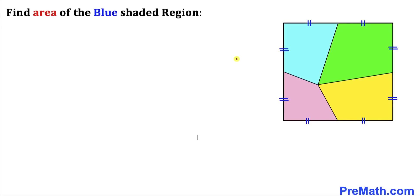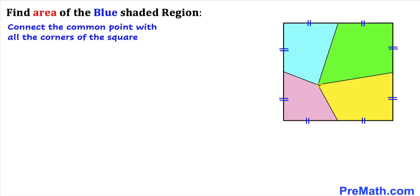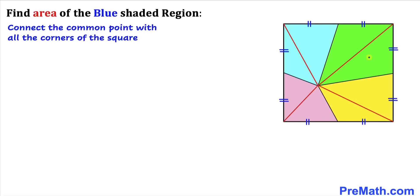Let's get started. Let's focus on this point — it is common to all of these regions. We are going to connect this common point with all the corners of this square. As you can see in this next diagram, I have connected all these corners with this common point.